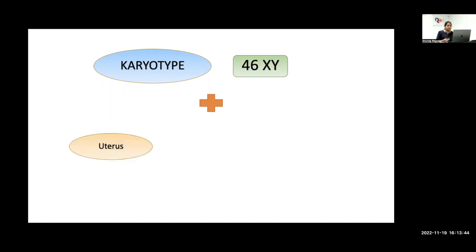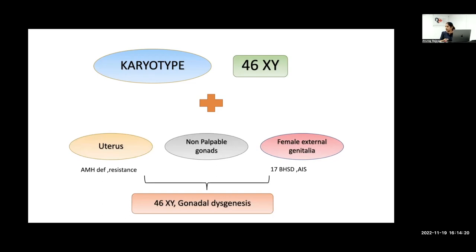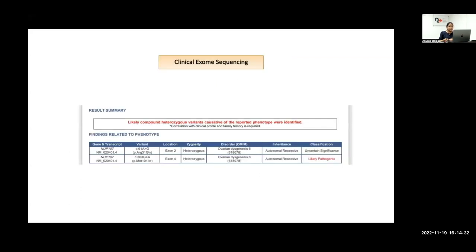Karyotype was ordered and came back as 46 XY. Combining the findings — 46 XY karyotype, presence of a uterus, non-palpable gonads, and female external genitalia — the differentials narrow further. A 46 XY individual with a uterus suggests AMH deficiency or resistance. Combining 46 XY with female external genitalia suggests AIS. But combining all three — 46 XY, uterus present, and absent gonadal function — the diagnosis is 46 XY gonadal dysgenesis: the gonad is not producing AMH, testosterone, or estrogen.